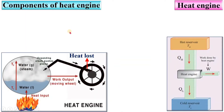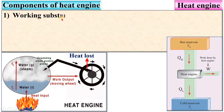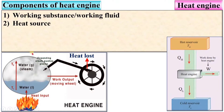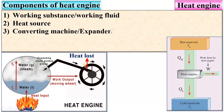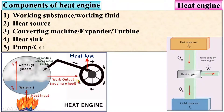Let's start from the first component of heat engine: working substance — here water is a working substance. Then heat source, then converting machine — it can be the expander or it can be the turbine. Then heat sink — here it is the atmosphere. Then pump or compressor to increase the pressure.